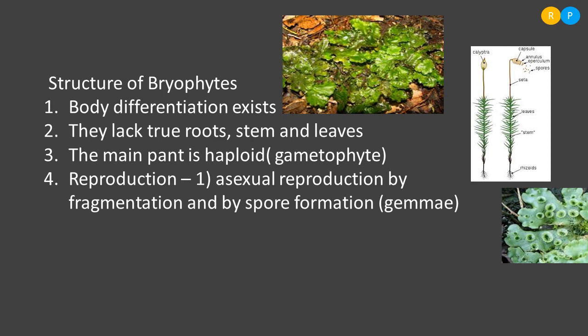How do these gametophytic plants reproduce? They reproduce by two different methods: asexual reproduction and sexual reproduction. Asexual reproduction takes place commonly by means of fragmentation — a parental body divides into a number of pieces and each piece develops into a new bryophyte. Some species also produce spores during asexual reproduction. For example, Marchantia, a type of bryophyte, has small cup-like structures on its surface, and these cup-like structures are meant for the formation of asexual spores.